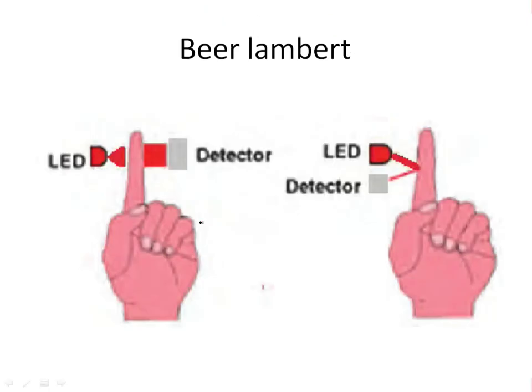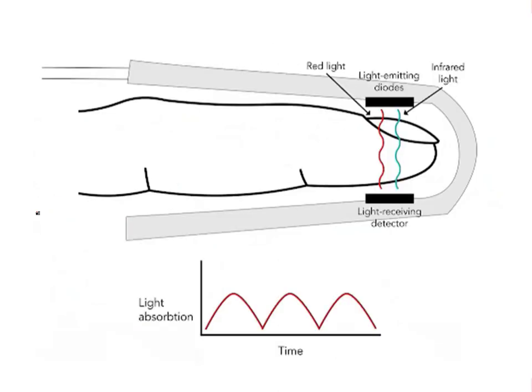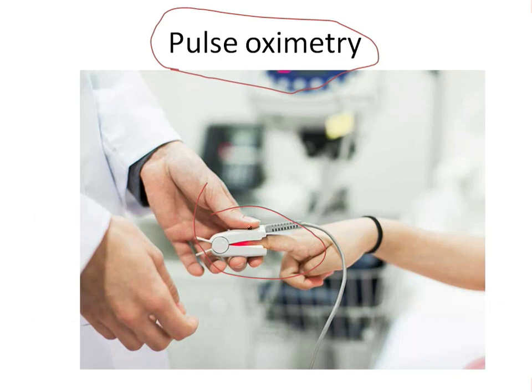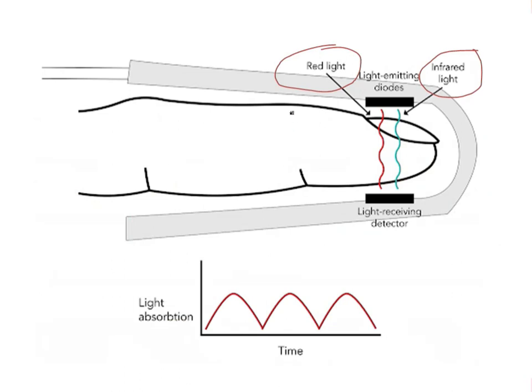Now, the concept of the pulse oximeter is we have what is called the light emitting diode. It works by two wavelengths: one of them is red wavelength, about 660 nanometers, and the other one is infrared light, with wavelength about 940 nanometers.